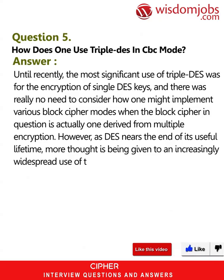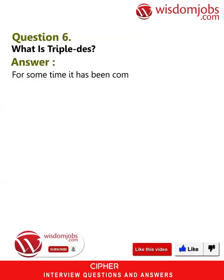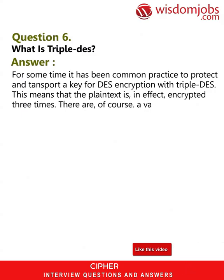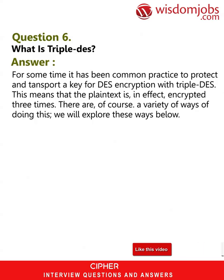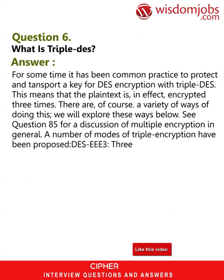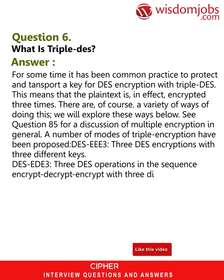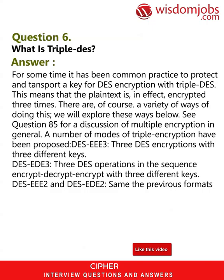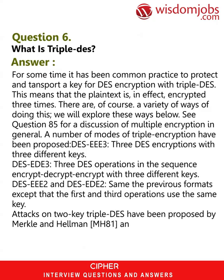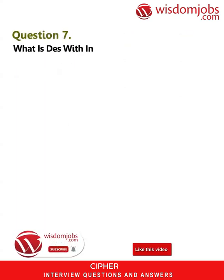Question 6: What is Triple DES? Answer: For some time it has been common practice to protect and transport a key for DES encryption with Triple DES, meaning the plaintext is in effect encrypted three times. A number of modes of triple encryption have been proposed: DES-EEE3 uses three DES encryptions with three different keys; DES-EDE3 uses three DES operations in the sequence encrypt-decrypt-encrypt with three different keys; DES-EEE2 and DES-EDE2 are the same except that the first and third operations use the same key. Attacks on two-key Triple DES have been proposed by Merkle and Hellman (MH-81) and van Oorschot and Wiener (VW-91), but the data requirements of these attacks make them impractical.